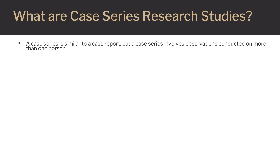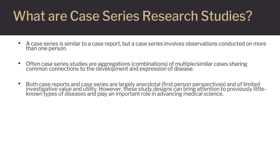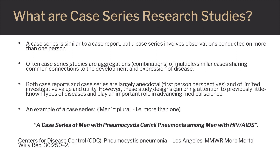A case series is different from a case report in that it involves observations conducted on more than one person, versus one person in a case report. Case series studies are aggregations — combinations — of multiple or similar cases sharing common connections to the development and expression of disease. Further, case series studies are largely anecdotal in nature and have limited to no experimental generalizability. This slide contains an example of a case series involving more than one study participant.